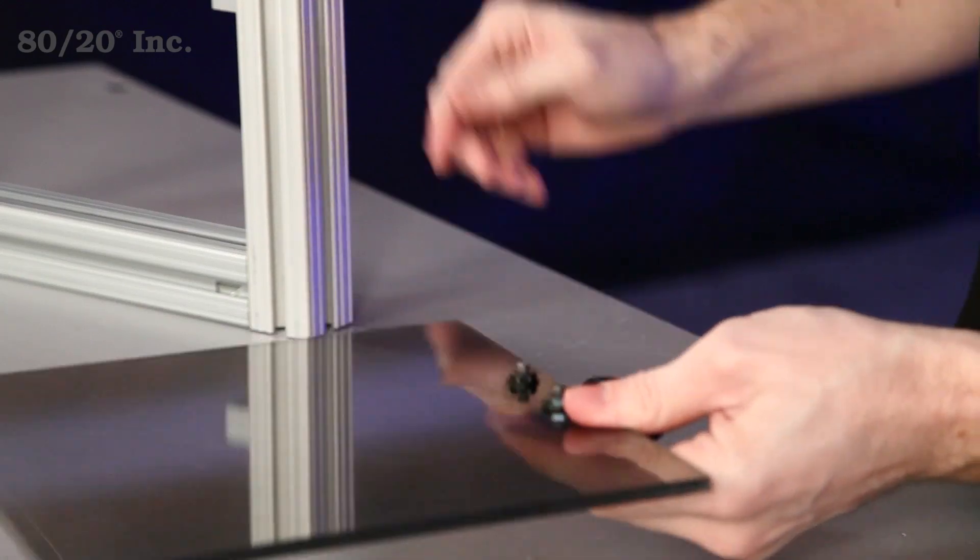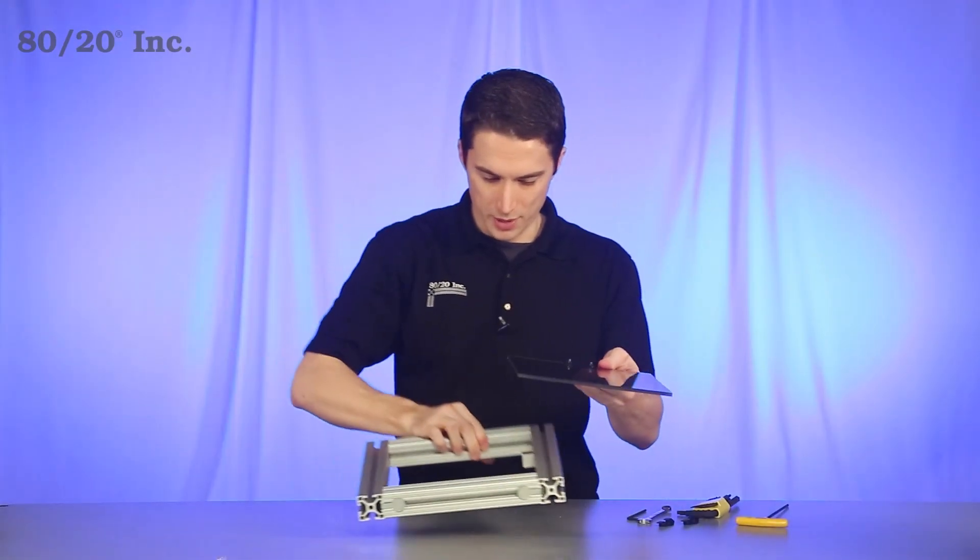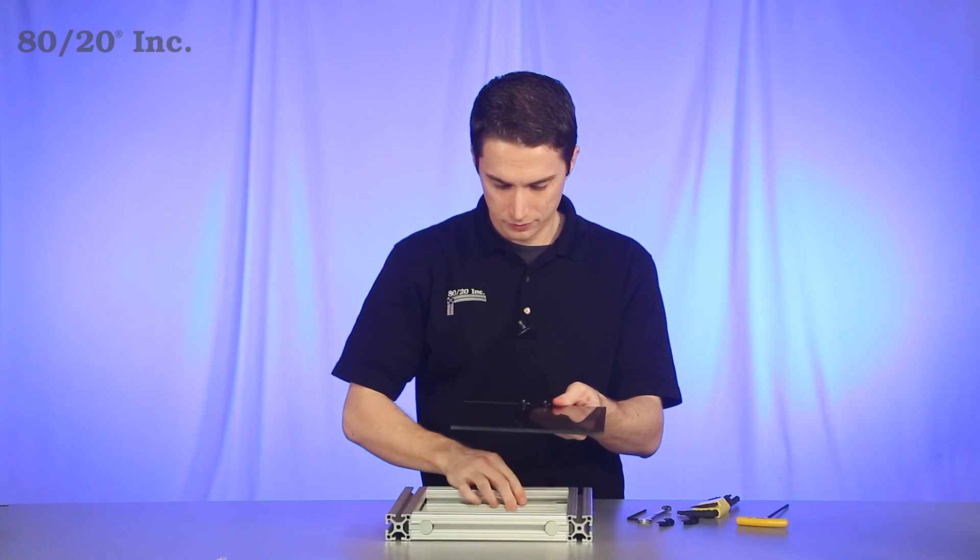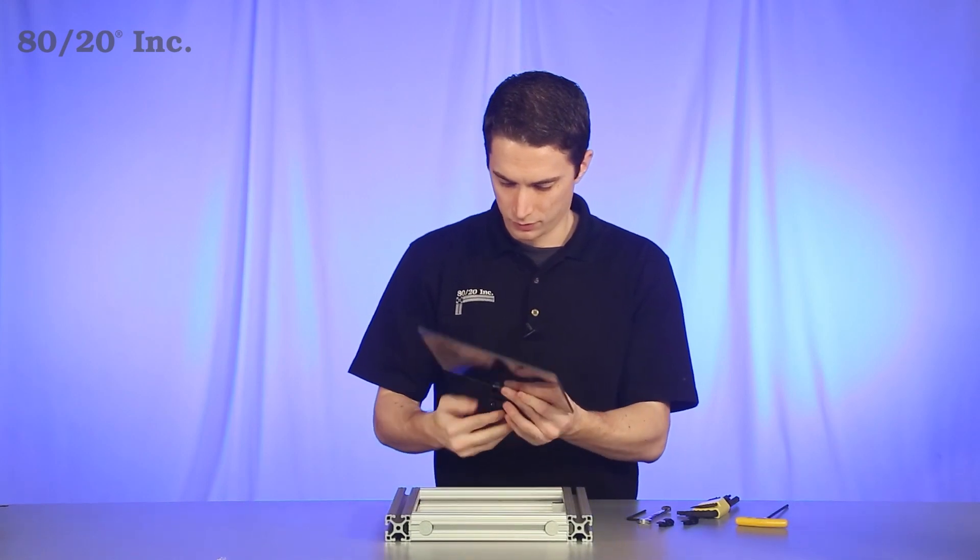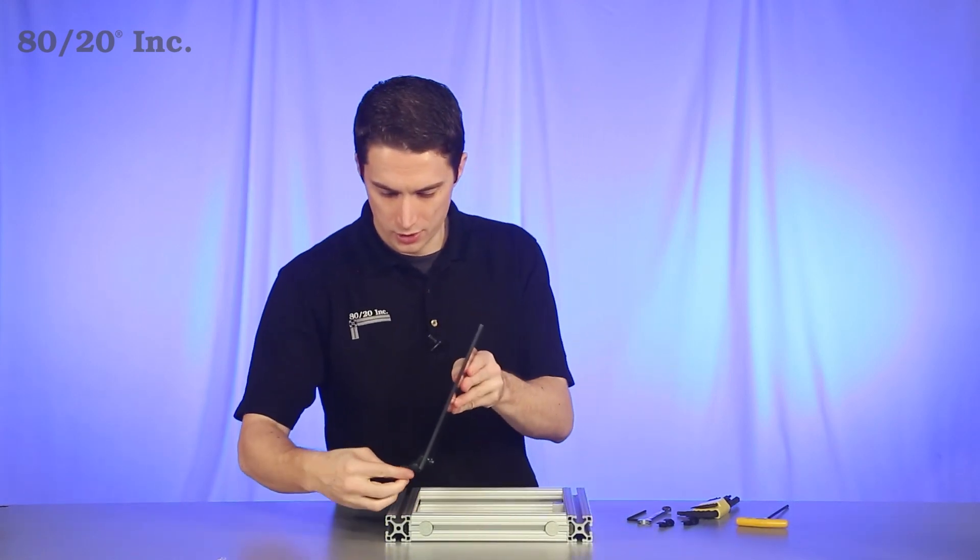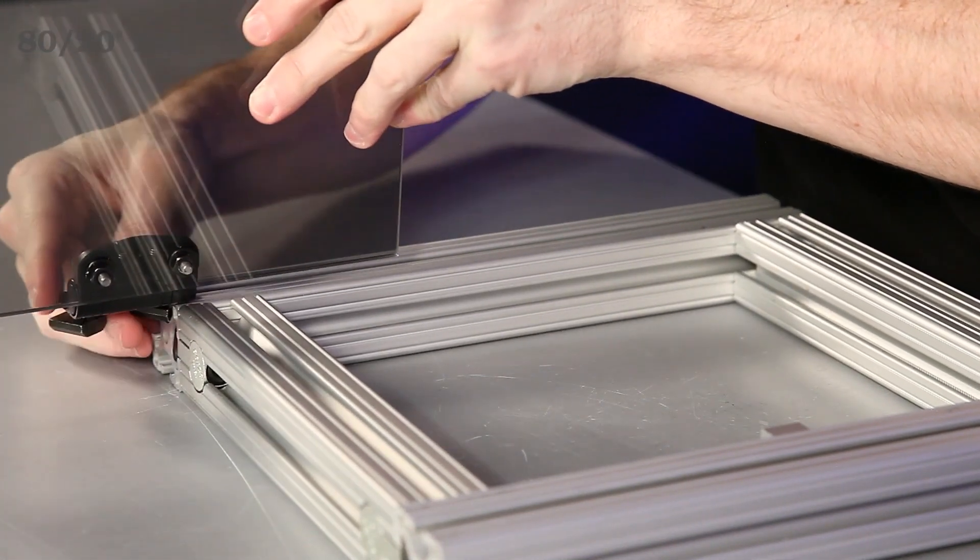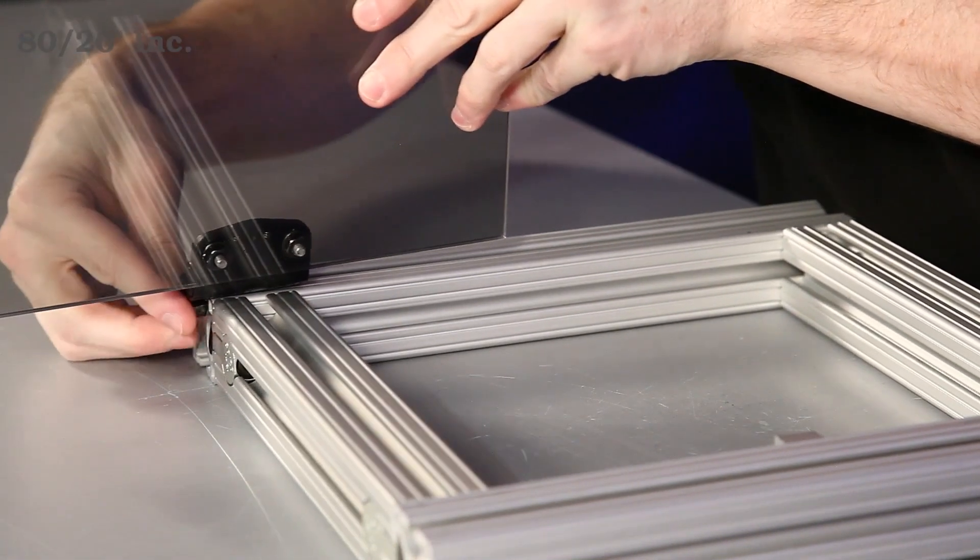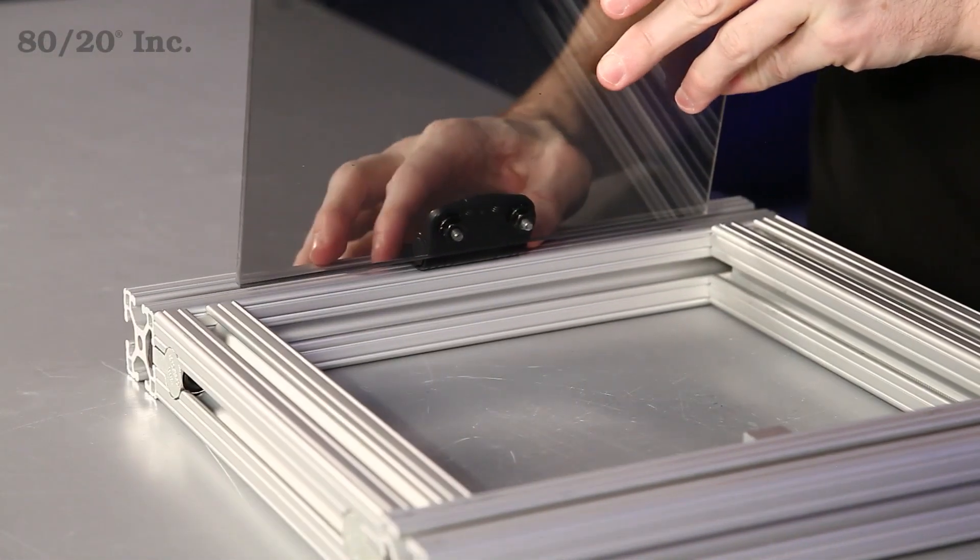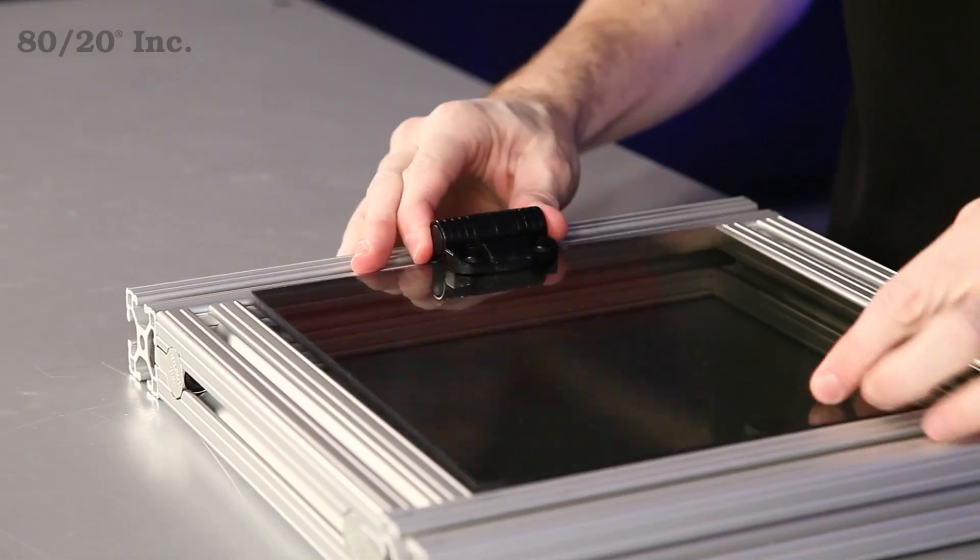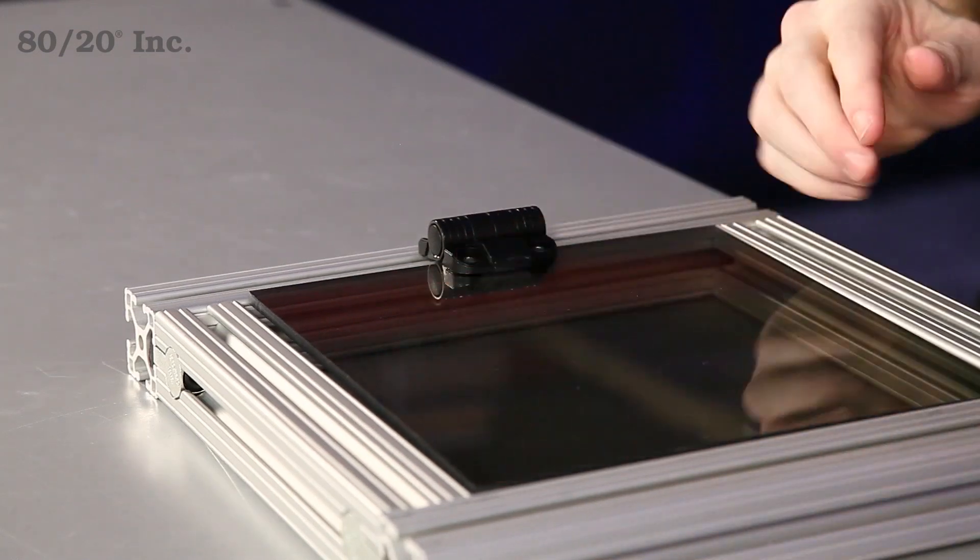Now once we have that done, we're ready to put it on our frame. So we'll grab our frame and lay it flat here, we'll get our hinge lined up, and just slide the T-nuts into the open T-slot. We'll move that into position, we'll lay that flat and that stopper will hold it into place for us while we tighten it down.